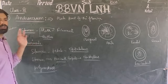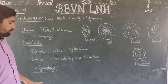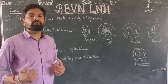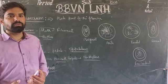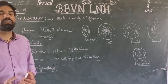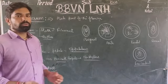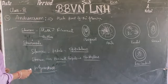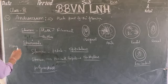Now, according to cohesion, the androecium or stamens can be of three types: polyandrous, monadelphous, diadelphous. According to cohesion, these are three types. Monadelphous is the first type.